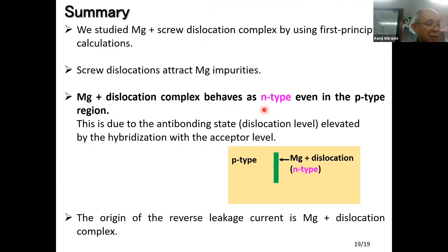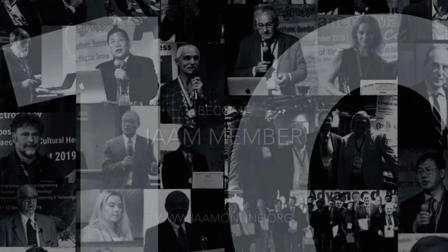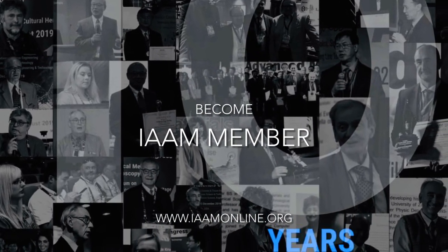In summary: we studied the magnesium–screw dislocation complex using first-principles calculations. Screw dislocations attract magnesium impurities. The magnesium–dislocation complex behaves as N-type even in a P-type region, due to the anti-bonding state — that is, the dislocation level is elevated toward the conduction band bottom by hybridization with the acceptor level. Therefore, a local N-type region is formed near the dislocation, and the origin of the reverse leakage current is the magnesium–dislocation complex.